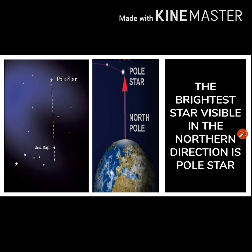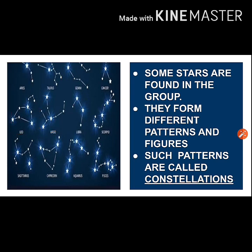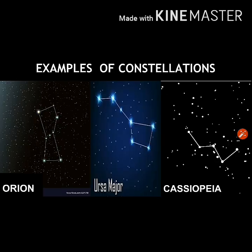The brightest star among all the stars is in the northern direction, and that star is called the Pole Star. We find some stars are in groups — they form some patterns or figures, which can be figures of animals, people, and so on. Such patterns are called constellations. A few examples of constellations are Orion, Ursa Major, and Cassiopeia.